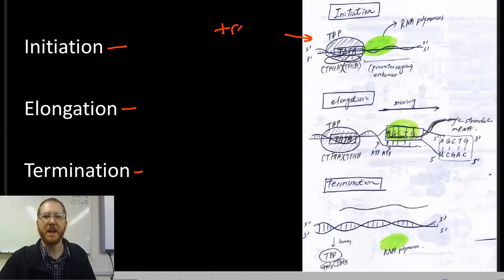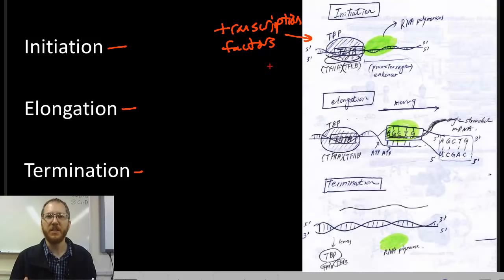This process has three parts: initiation, elongation, and termination. Initiation involves protein transcription factors. We've talked about these with cell signaling, where transcription factors are produced or activated in response to a cell signal. They bind to a sequence right before the promoter called the TATA box. This allows transcription factors to bind and let RNA polymerase know where to go.